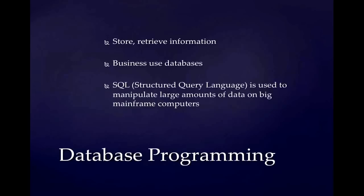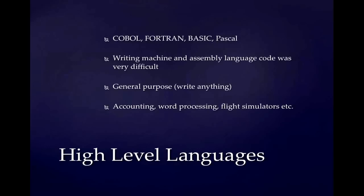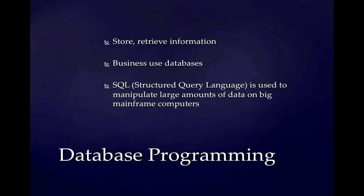What other languages do we have? High-level languages can be used to write all of those particular softwares — you can practically do anything with them. For example, the Windows operating system was written completely in C, so that's how powerful these languages are. But you also have other programming languages — database programming languages. A database is basically an application that stores information, and you retrieve that information from it. Most businesses today use databases — they store all of their customers' details: addresses, phone numbers, contact numbers. On mainframe computers, for companies that store large amounts of data, the most common and frequently used language is Structured Query Language, which is SQL. It's used to manipulate large amounts of data on big mainframe computers.